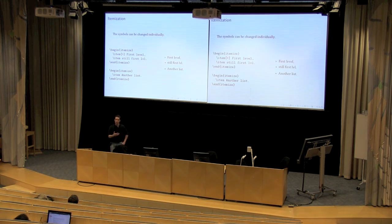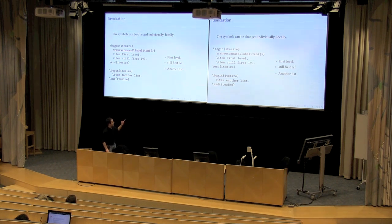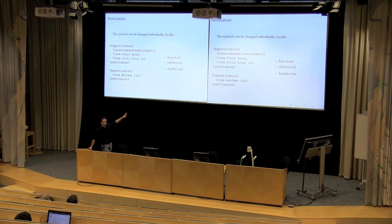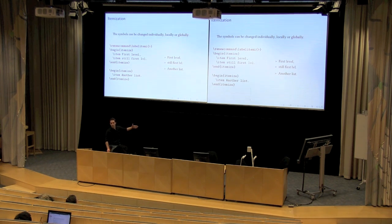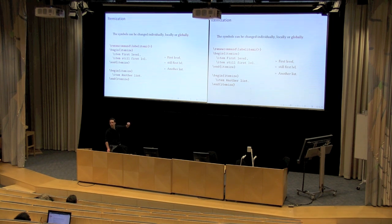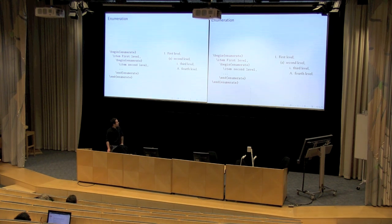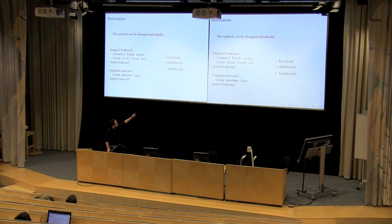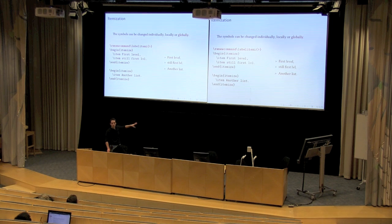You can change the symbol used for itemization individually or globally. Internally there's a command that produces the symbol — search the web for more information. You can change it for any of the four levels: replace the Roman numeral suffix (i, ii, iii, iv) in the command name. You can change it for a single item, for items inside an itemize, or globally for the whole document.